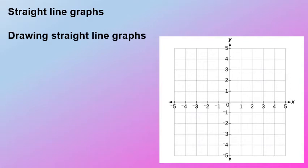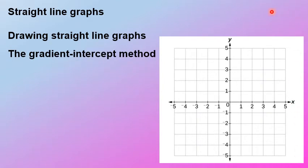Let's quickly look at drawing straight line graphs using the gradient intercept method. The gradient intercept method is most useful when you have a grid to work with — it's more accurate and there's less chance of making a mistake. It's also a quick and easy method to check yourself after drawing using the table method or the dual intercept method.